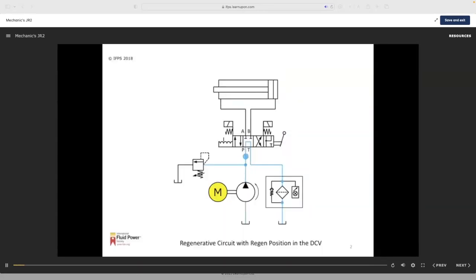Regeneration can be part of the spool configuration. This four-position directional control valve uses solenoids for the three standard positions: Neutral, Extend, and Retract.